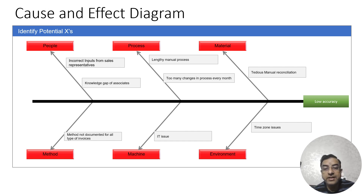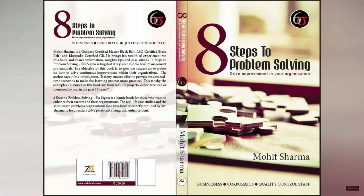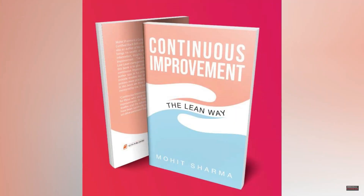The next thing the team did was to collect data on some of these X's and perform data analysis — I will show you that in Minitab. You can also buy my authored books on Amazon: my first book is '8 Steps to Problem Solving' which talks about Six Sigma concepts, and my second book is 'Continuous Improvement: The Lean Way' which talks about lean concepts.